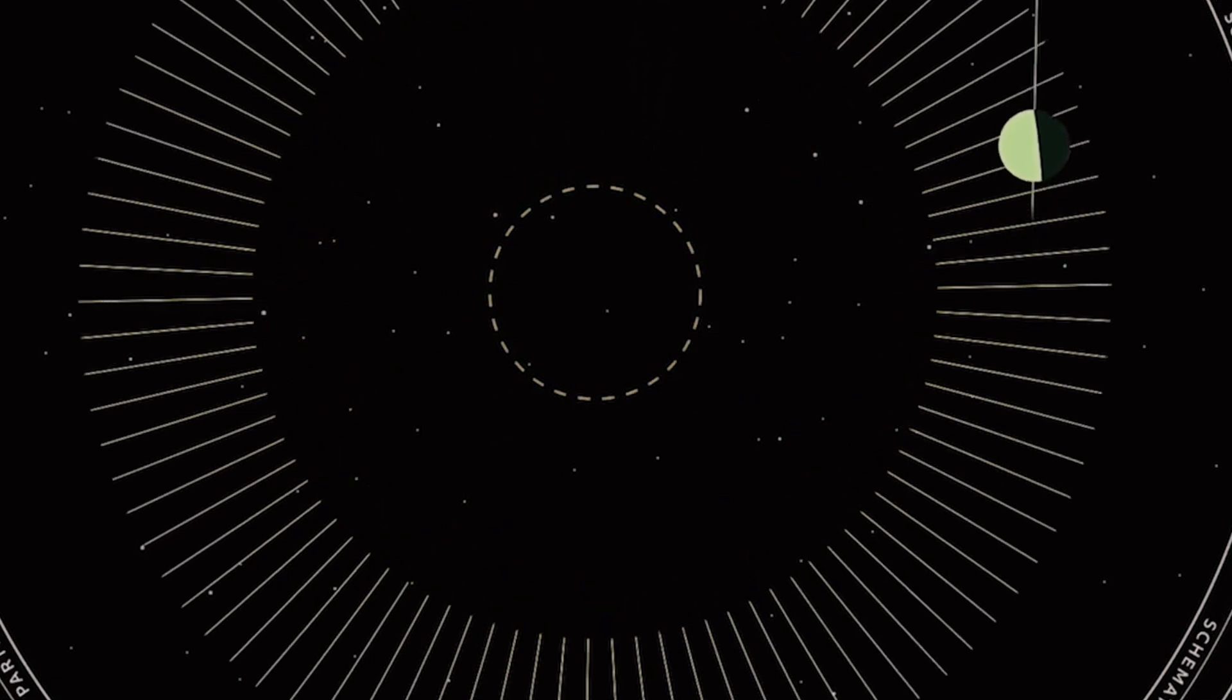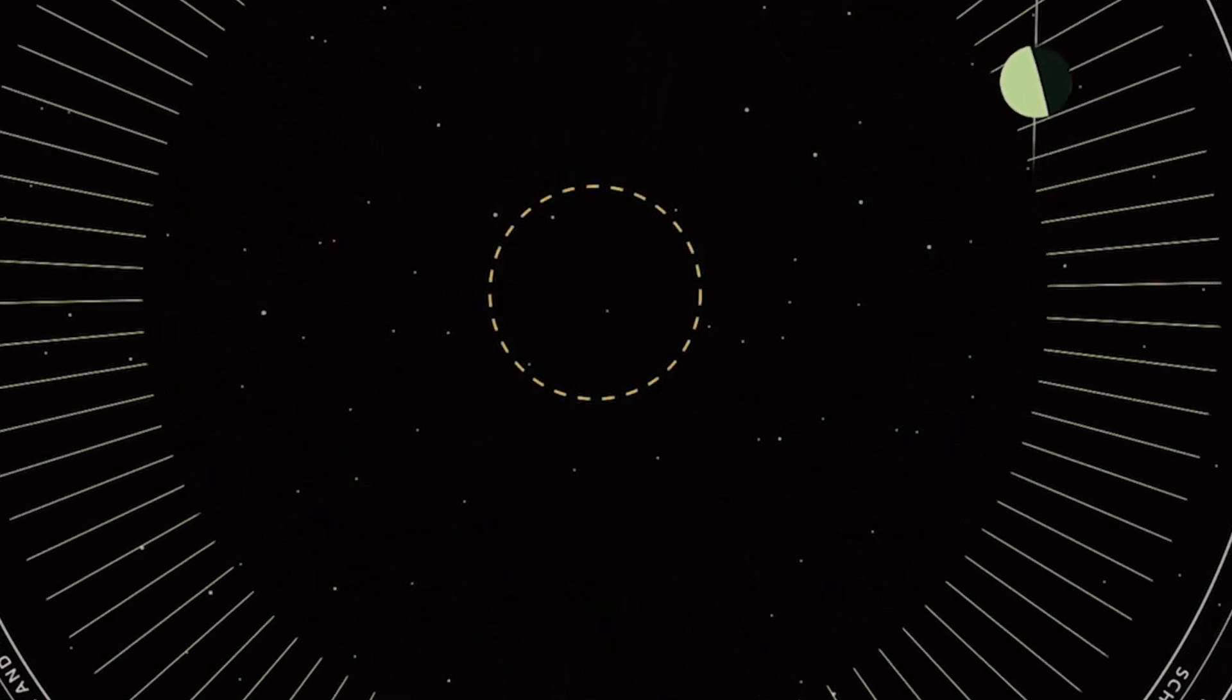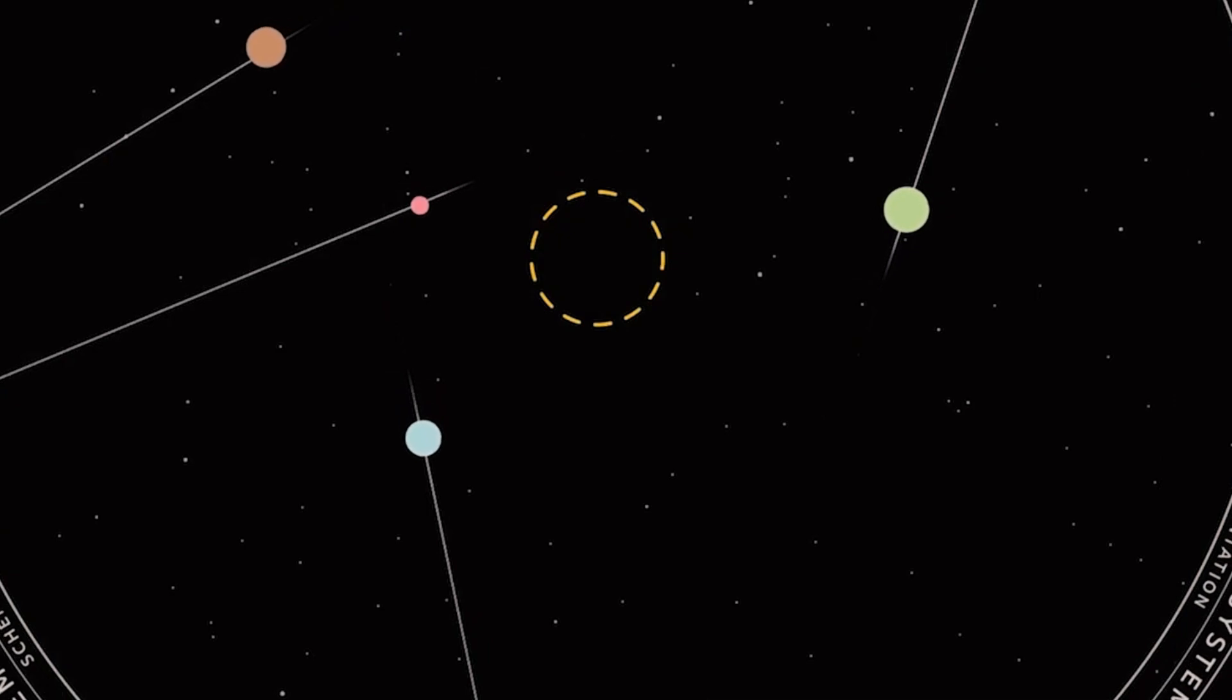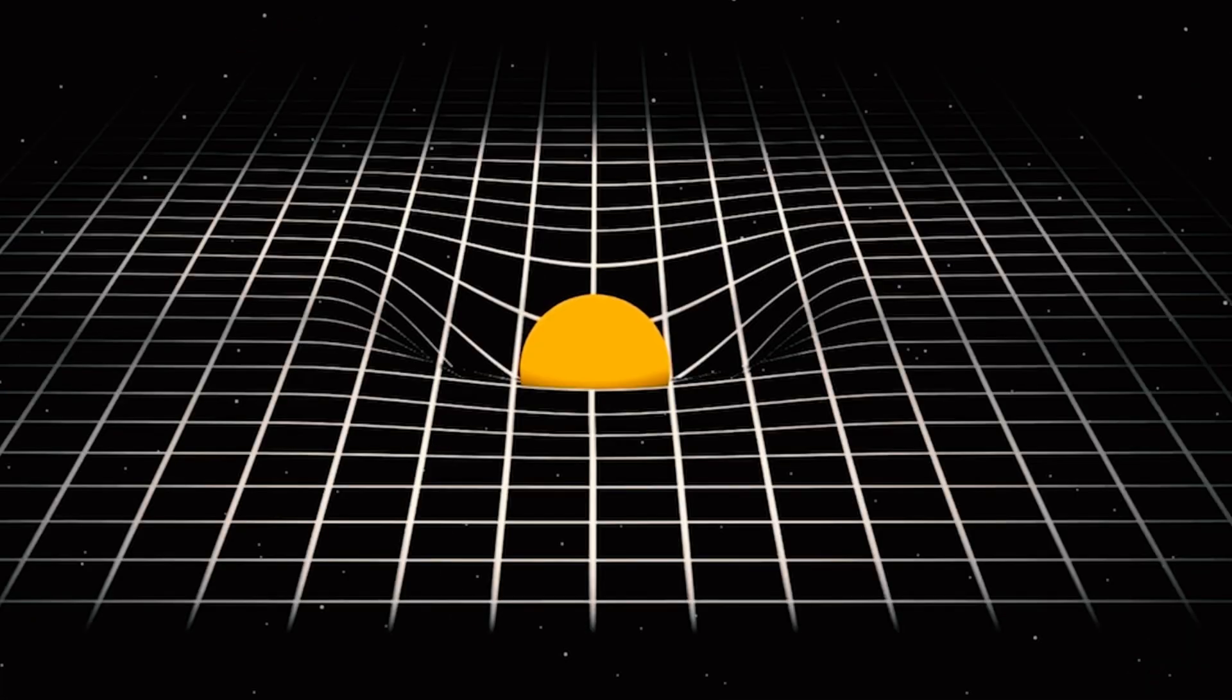Erwin Schrödinger's famous thought experiment with the perplexing Schrödinger's cat encapsulates the enigmatic nature of quantum superposition, where the cat could be both alive and dead simultaneously.